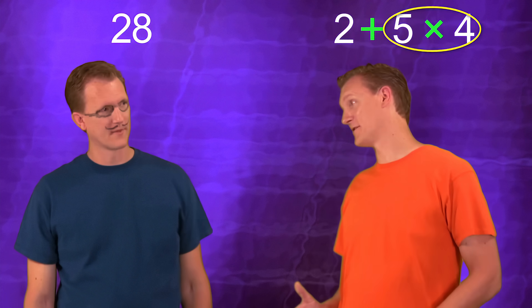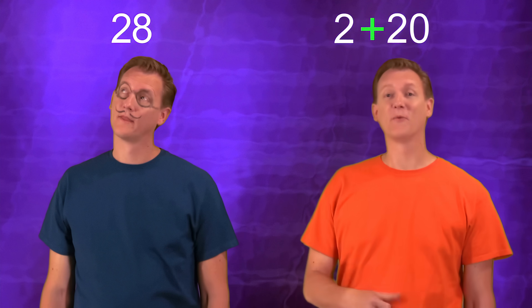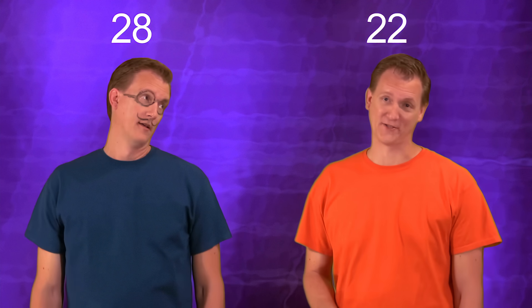Don't worry, I'm not going to copy your answer because I want the right answer. And I prefer multiplying, so I'm going to do that first. Let's see... 4 times 5 equals 20, and then I'll add the 2 which gives me 22 for a final answer.